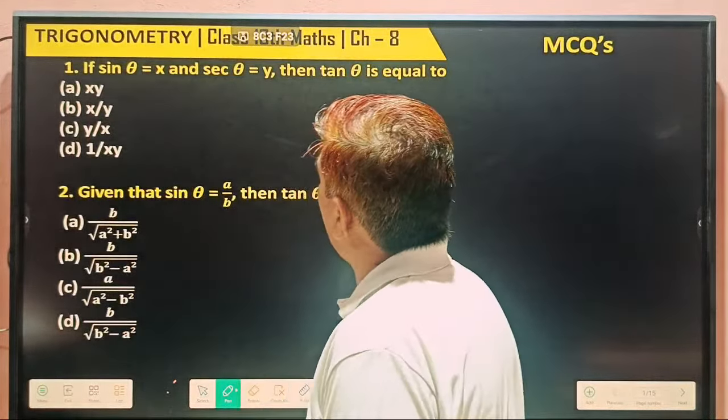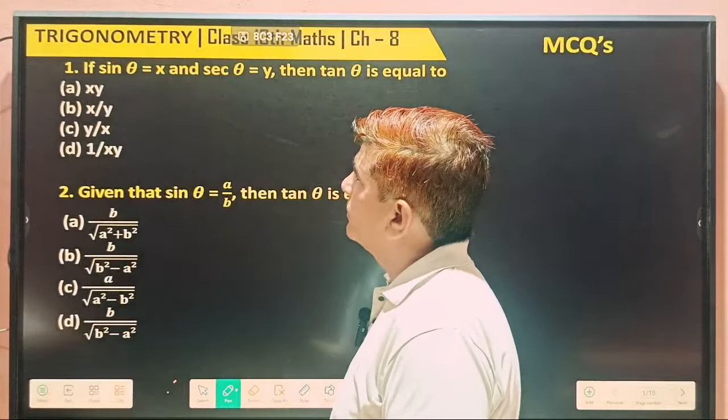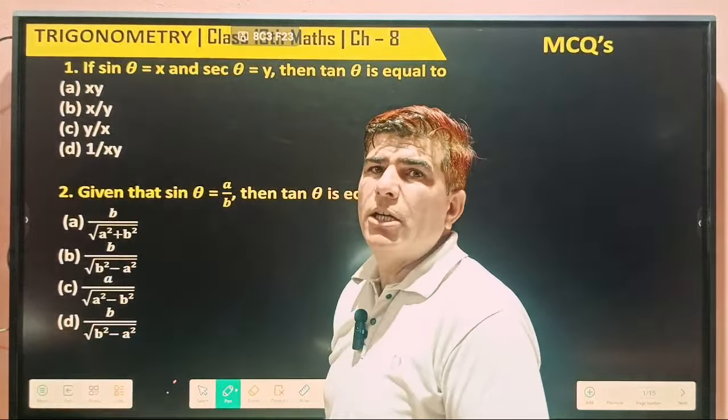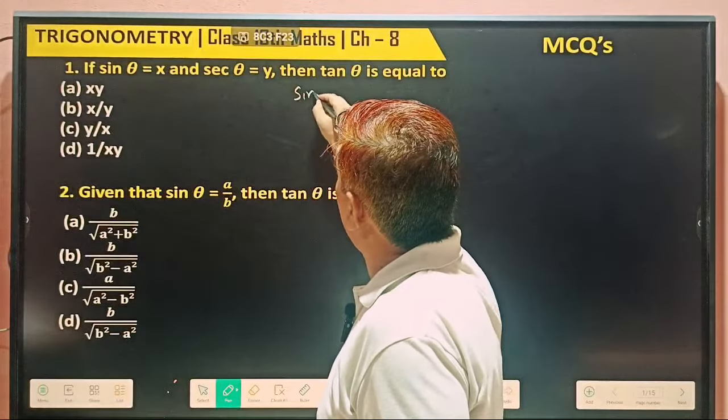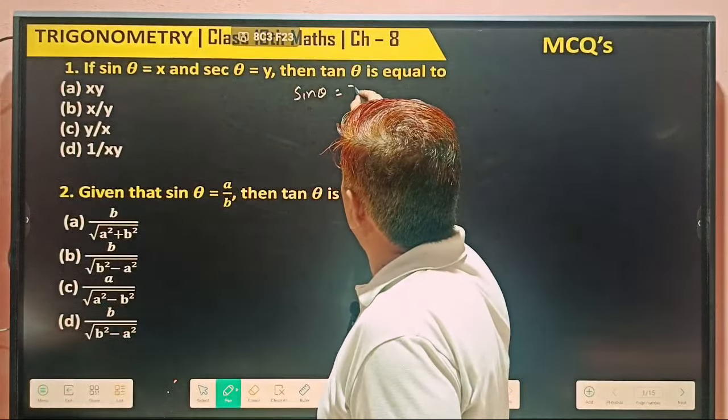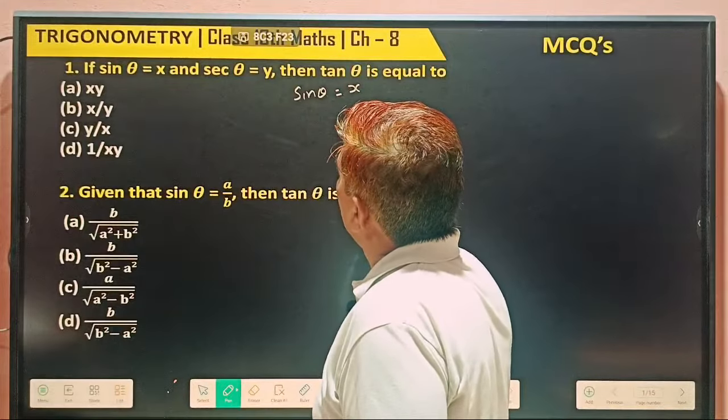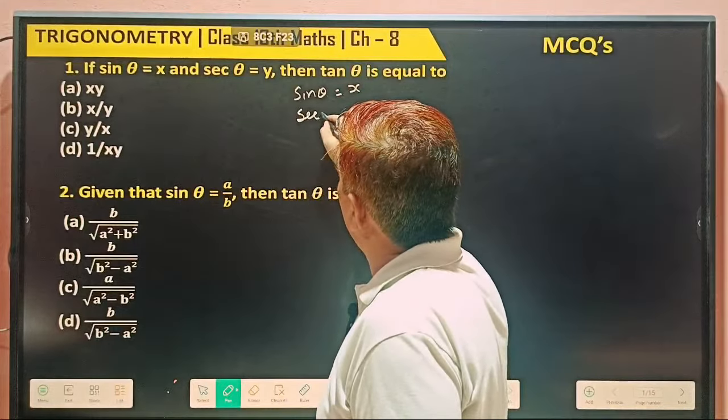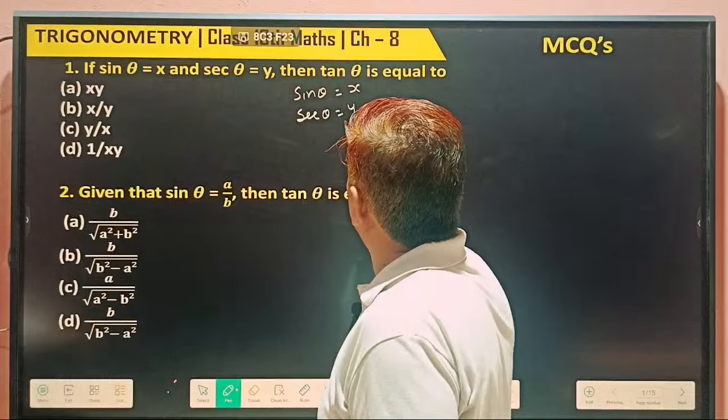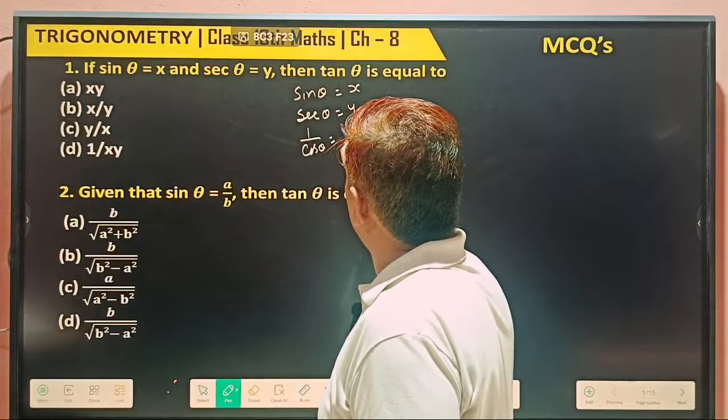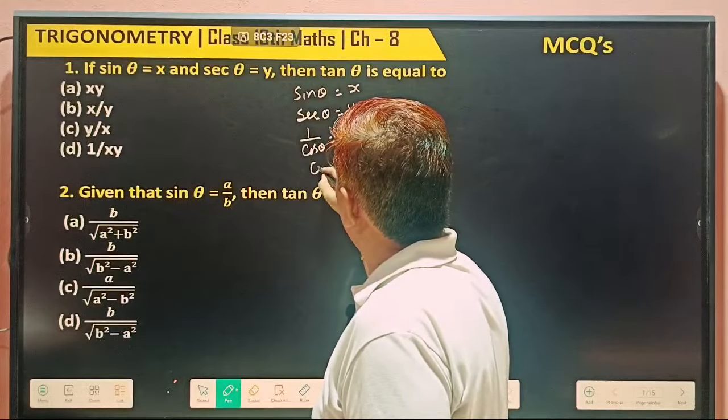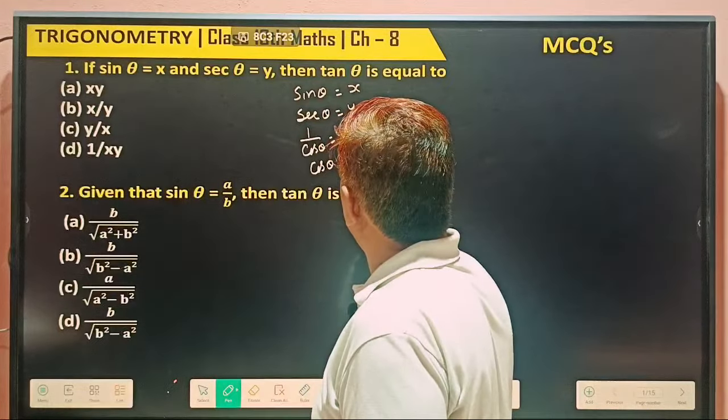First question: If sin θ equals x and secant θ equals y, then tan θ is equal to what? So what's given? Sin θ equals x, and secant θ equals y. Secant meaning 1 over cos θ is equal to y, which means cos θ equals 1 by y.